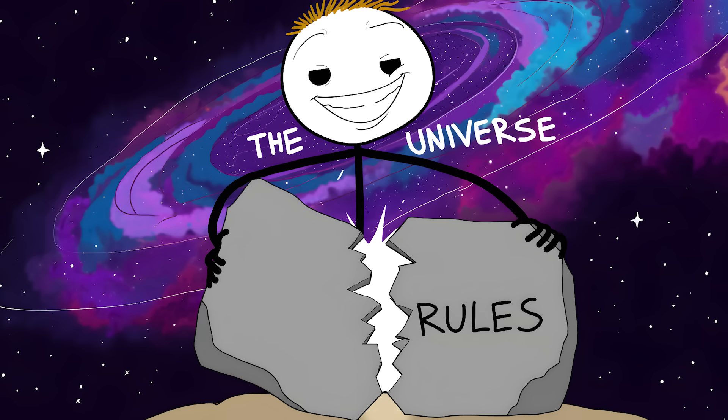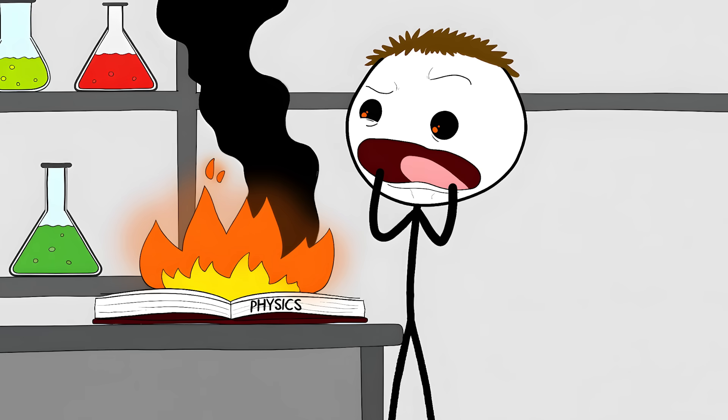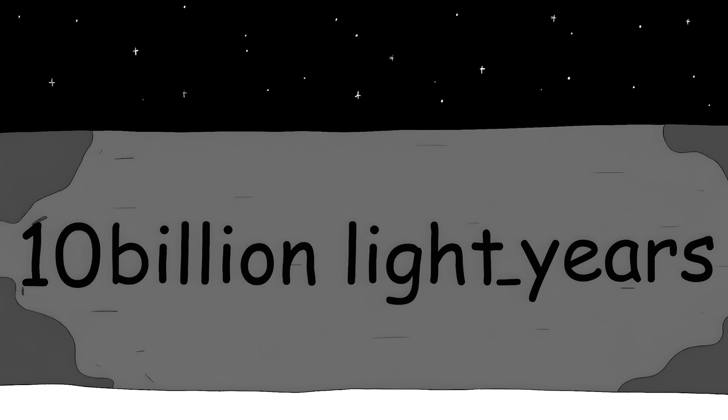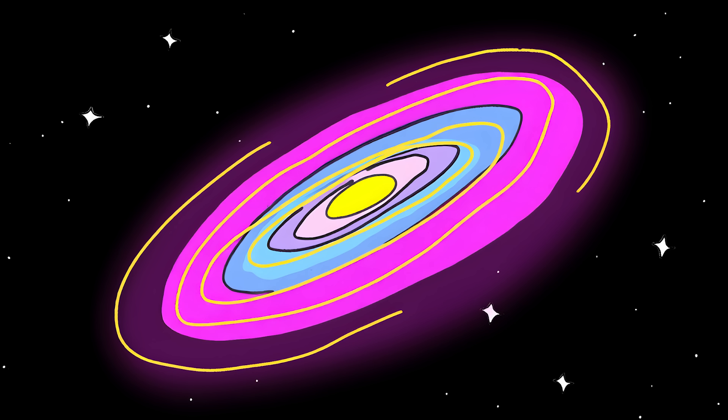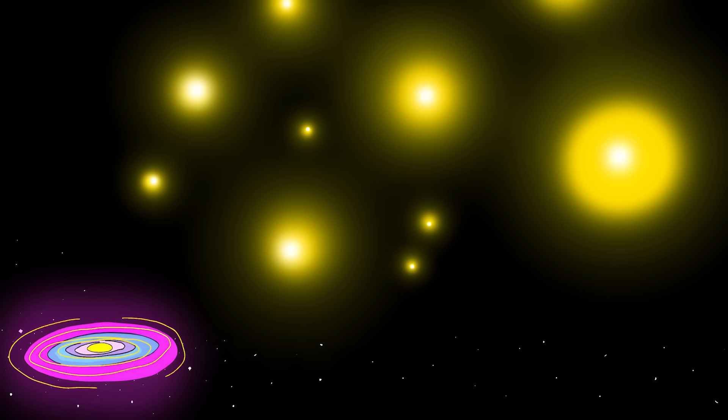Number three, the wall that shouldn't exist. The Hercules Wall is so massive it breaks the rules of physics. We're talking about a structure that's 10 billion light years across. To put that in perspective, our entire Milky Way galaxy is only 100,000 light years wide. That means this wall is 100,000 times bigger than our galaxy.